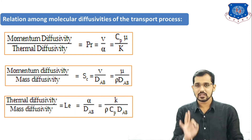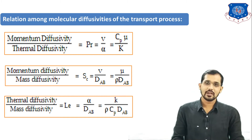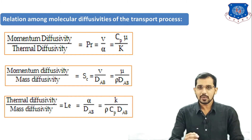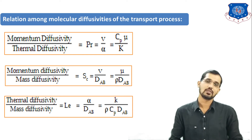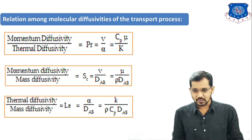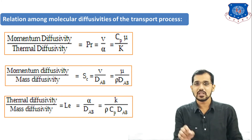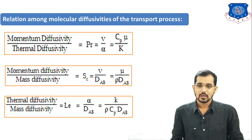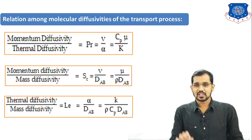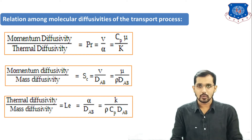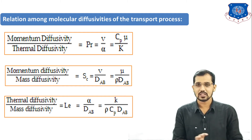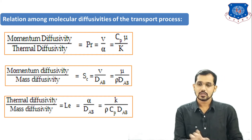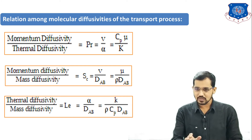The second relation is between momentum transfer and mass transfer. The ratio of momentum diffusivity to mass diffusivity is represented by the Schmidt number Sc, equal to ν/DAB = μ/(ρDAB), where ν is kinematic viscosity represented by μ/ρ. DAB is the mass diffusivity of component A into component B.